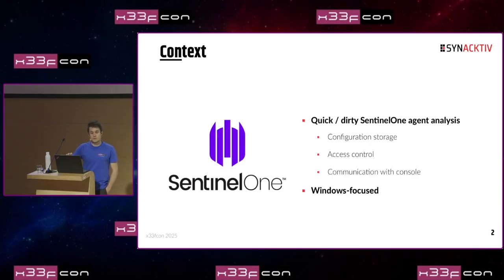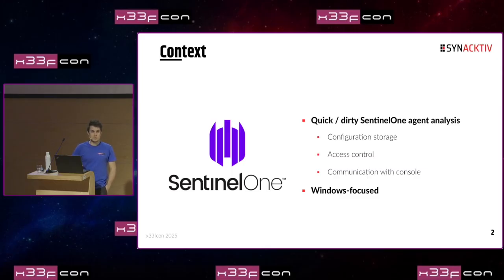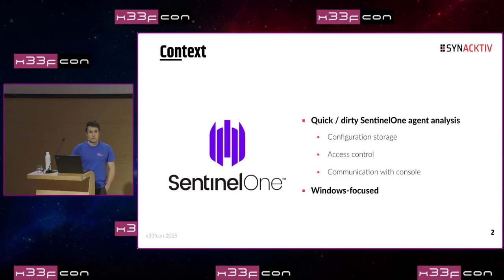I'm not actually very good with reverse engineering, so I had a more empirical approach. I wanted to check about configuration storage, access control, and the communication from the agent to the console. I focused this analysis on the Windows agent. There are some differences between the Windows and Linux versions, but most findings will be applicable to the Linux agent as well.